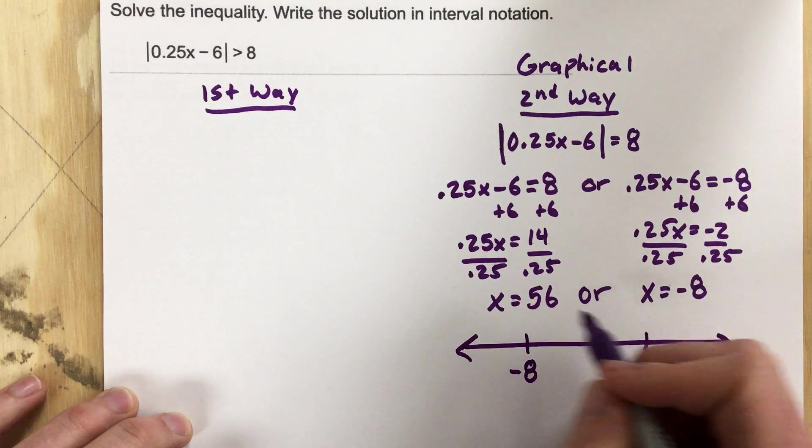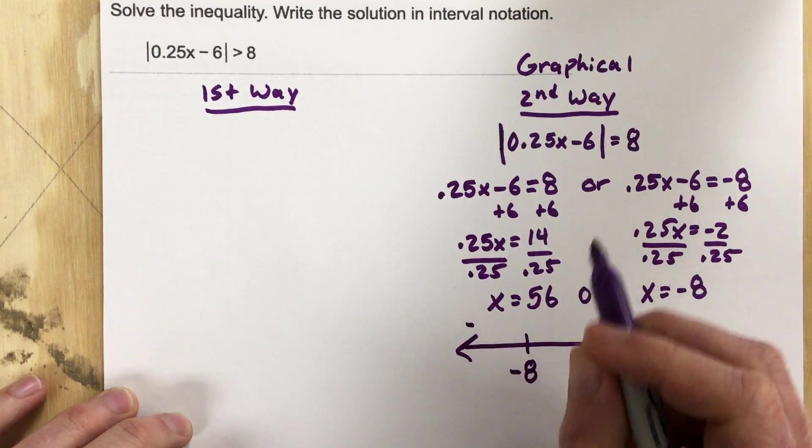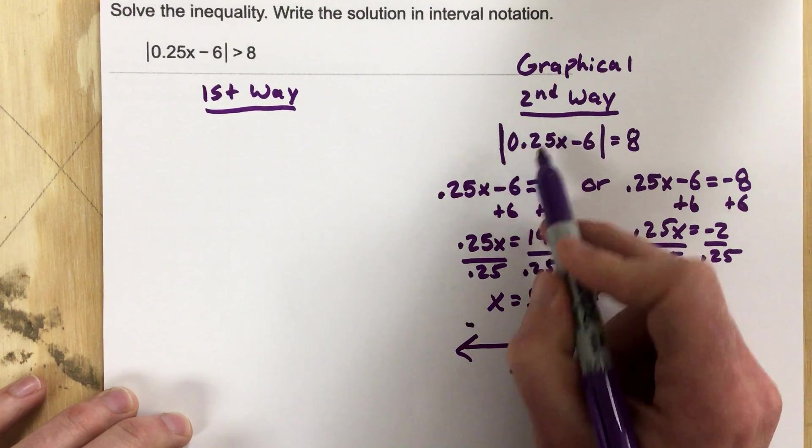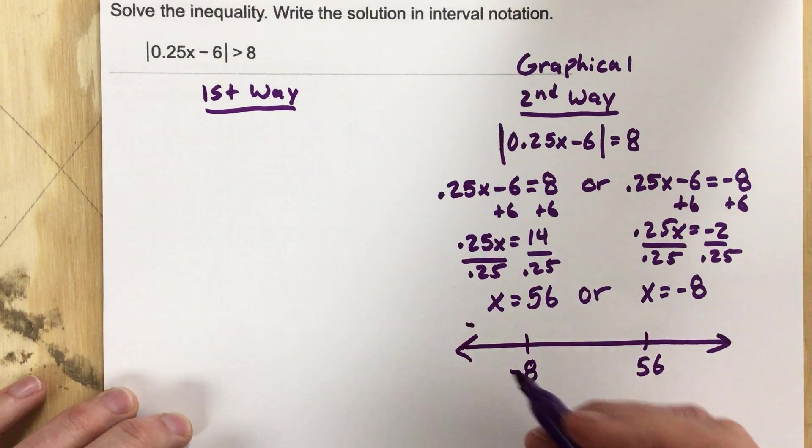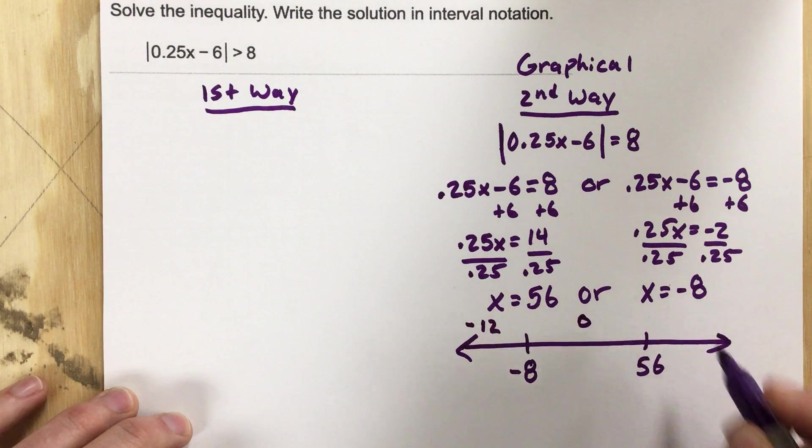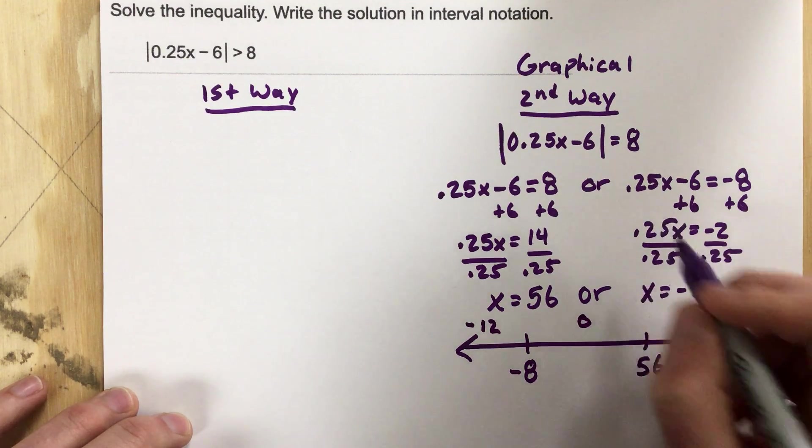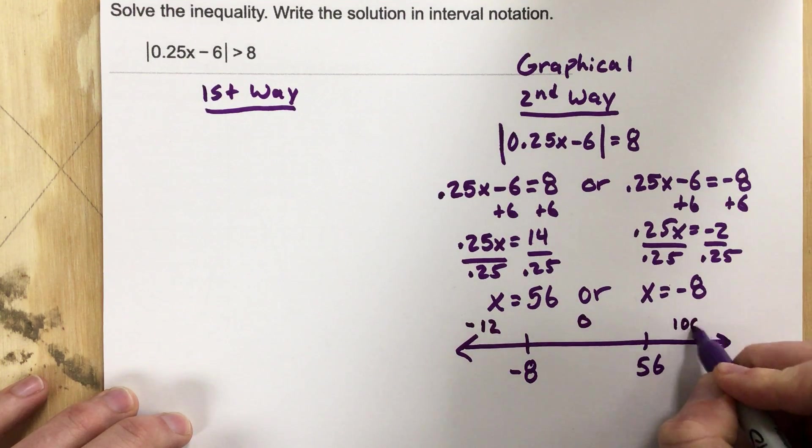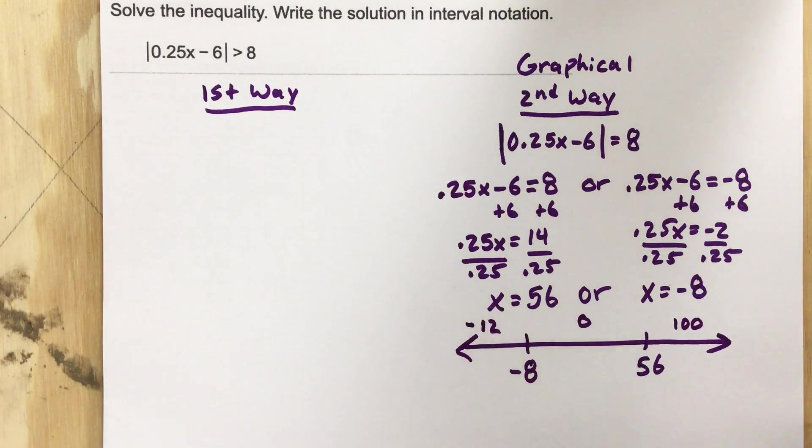So when I go to test this, I'm going to test negative 12 because 0.25 is a quarter and I know I'm going to have to divide by 4, so I'm going to use negative 12 to test, zero, and then I'm also going to use 100. I'm going to get out my TI-84 to test this.